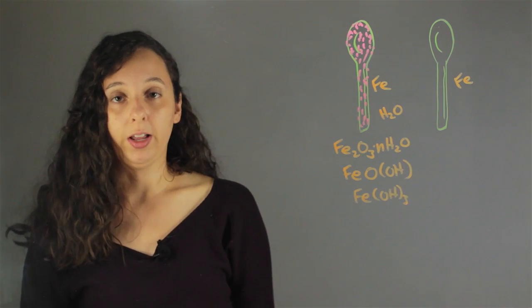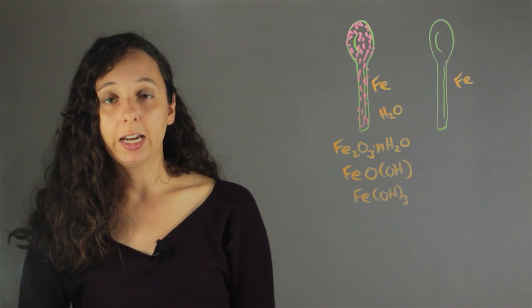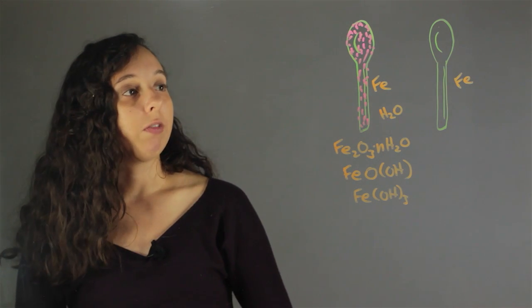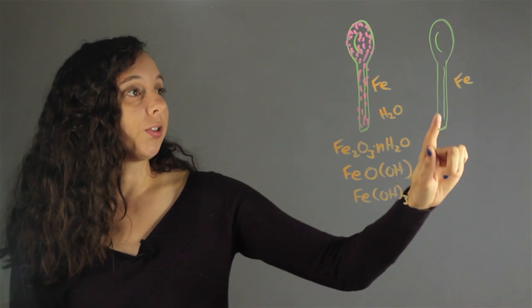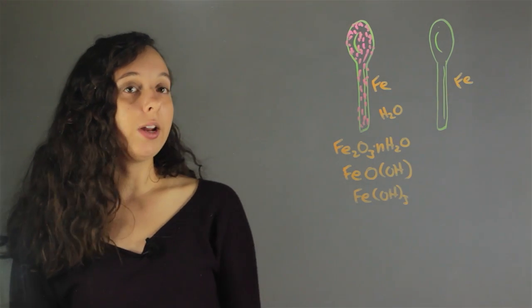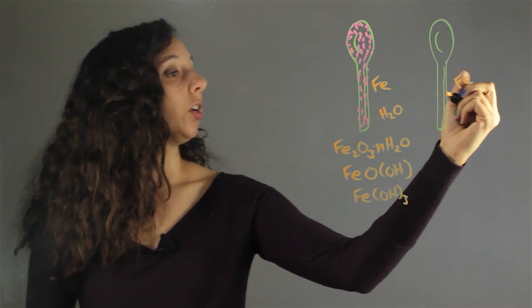So that's gross. We don't like it. So what can we do about it? Well, we can galvanize it. And galvanizing is when we take another spoon, also made of iron, and we coat it in zinc.